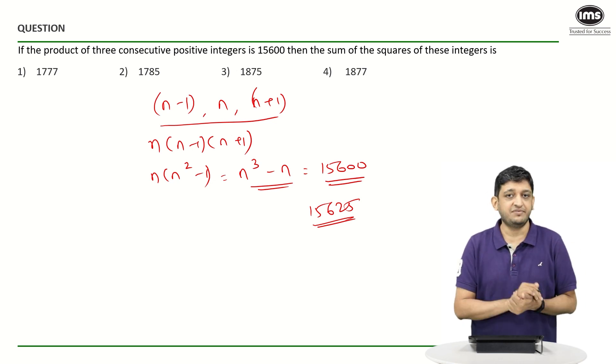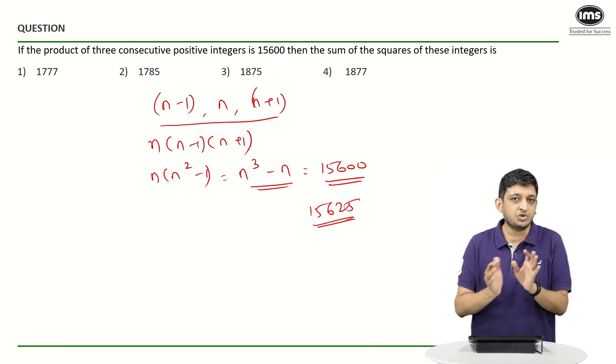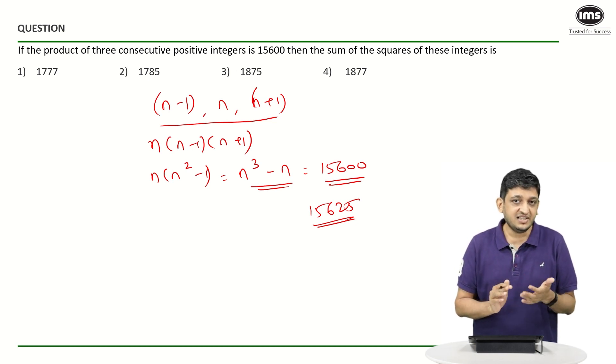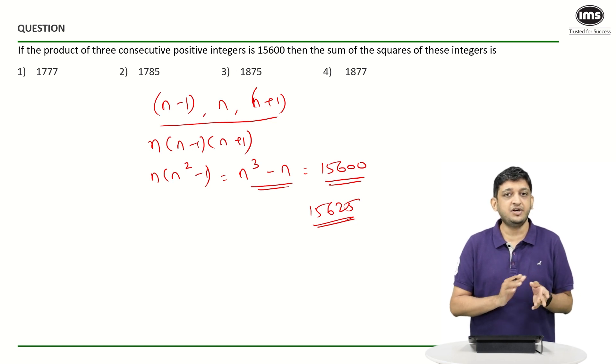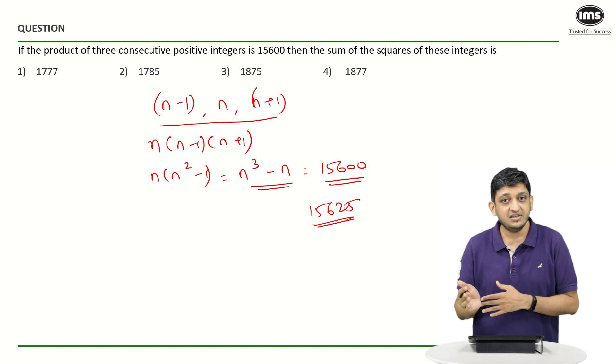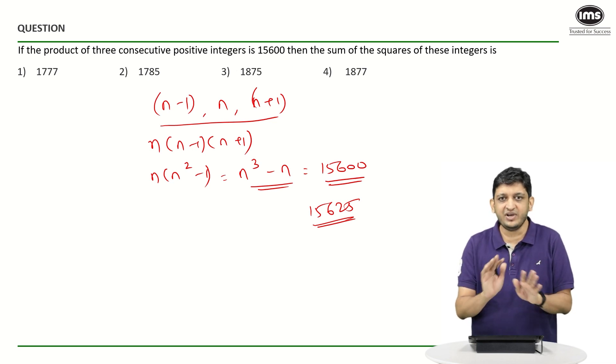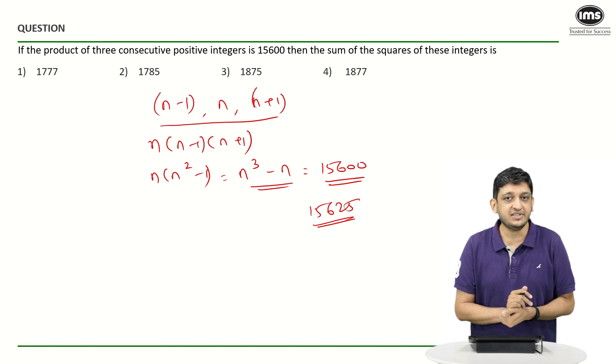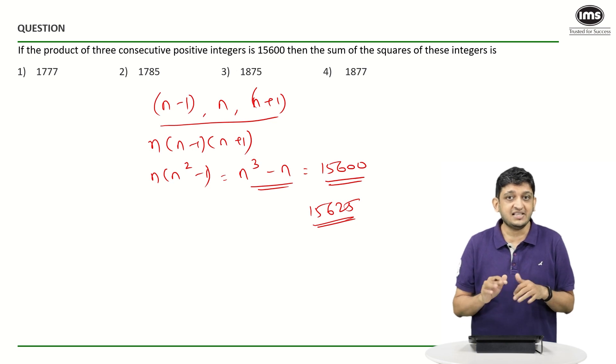Let us say I am talking about 15600 being close to a cube. Now another thing that should be obvious is that 20³ is going to be 8000, 30³ is going to be 27000. 15600 is somewhere in between 8000 and 27000, so I know that my answer has to be in the 20s for n.